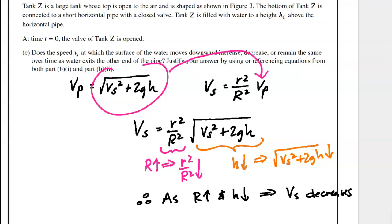Focusing on the equation VS = (r²/R²) × sqrt(VS² + 2gH): as the tank widens (big R increases), the fraction r²/R² decreases, making that term smaller. Additionally, as water drains and H decreases, the radical term sqrt(VS² + 2gH) also gets smaller. Overall, as R increases and H decreases over time, the speed VS of the water surface decreases.